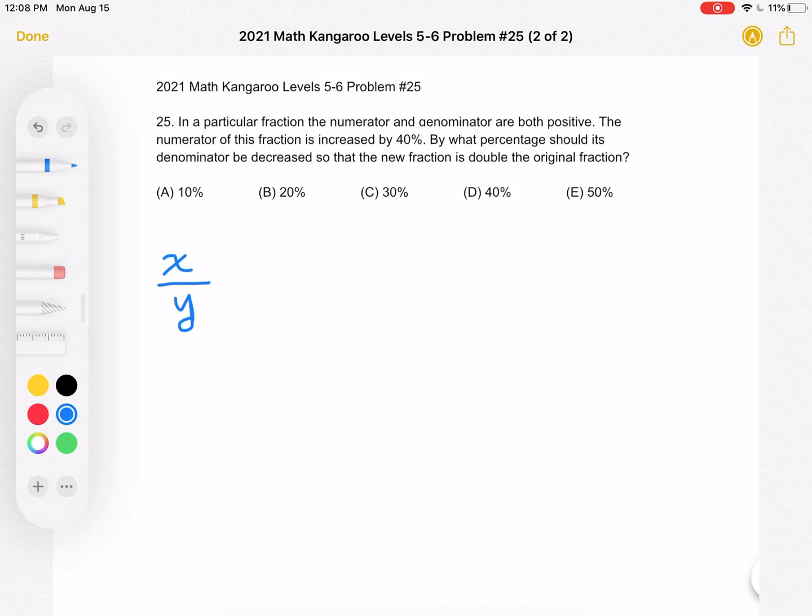Then the problem tells us that we increase the numerator by 40%. So what would that be? That would be 1 plus 0.4, and that's the quantity times x, because we took our original x and we increased it by 40%. That's what the 0.4 stands for.